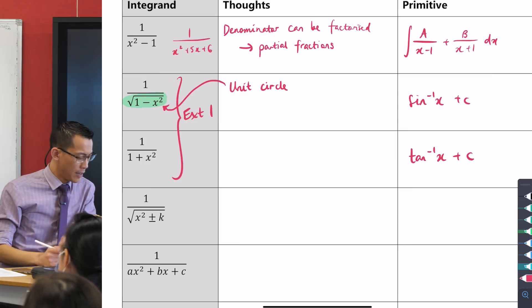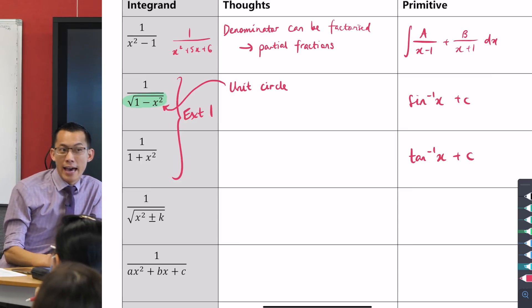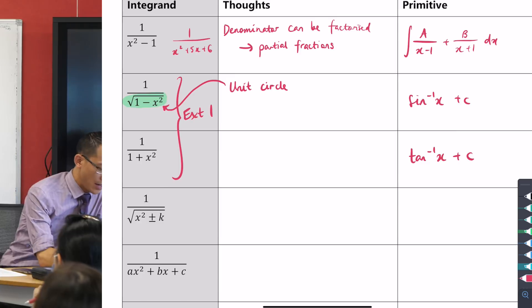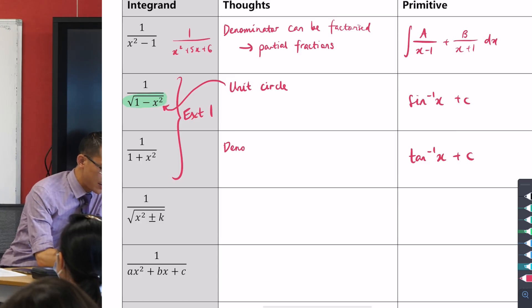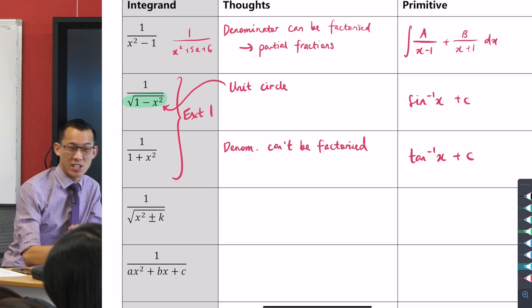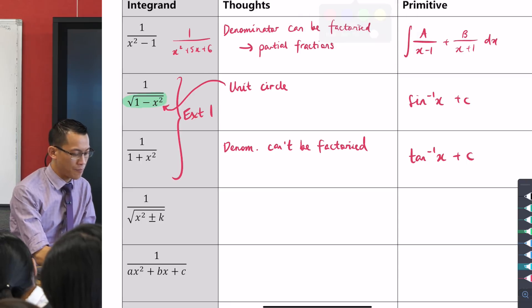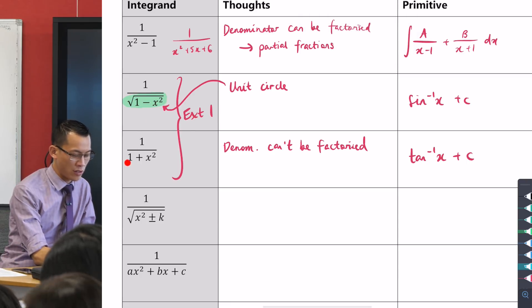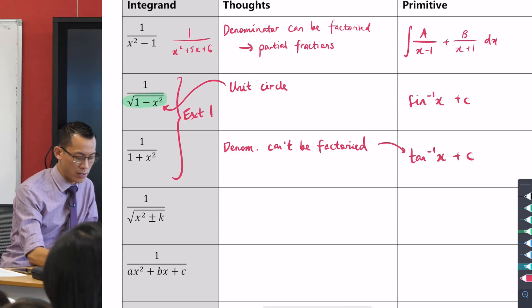But for me, my mental cue is, this is something which, unlike the first one which I can turn into partial fractions, and unlike the second one which has that reminder of the unit circle, that doesn't look like the unit circle to me. It's a parabola moved up a little bit, the denominator, and I can't factorize it either. So the denominator can't be factorised.